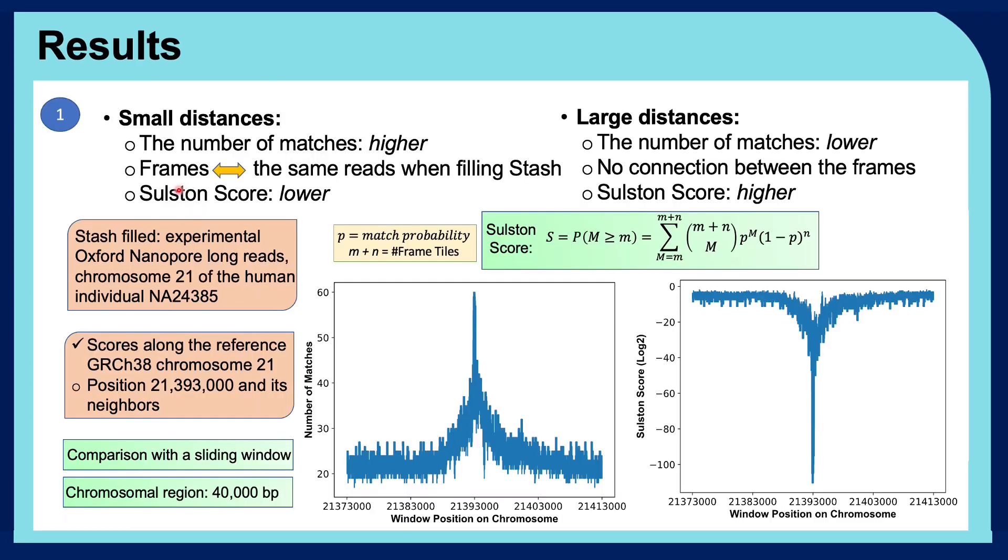Our expectation is that for small distances on a genomic region, the number of matches would be higher because the corresponding frames would be coming from the same reads when filling stash. And the Sølsten score, which is based on the following formula and implies the relatedness of two frames, would be lower.